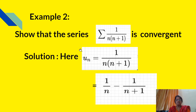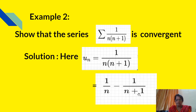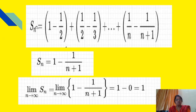Example 2: Show that the series Σ 1/(n(n+1)) is convergent. Here un = 1/(n(n+1)), which can be written as un = 1/n − 1/(n+1). Therefore Sn = 1 − 1/2 + 1/2 − 1/3 + ... + 1/n − 1/(n+1).